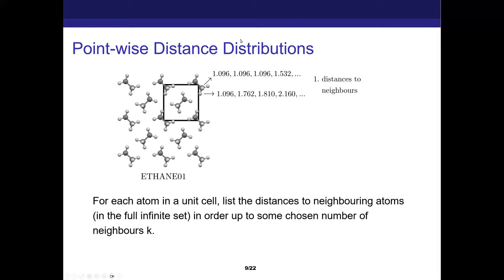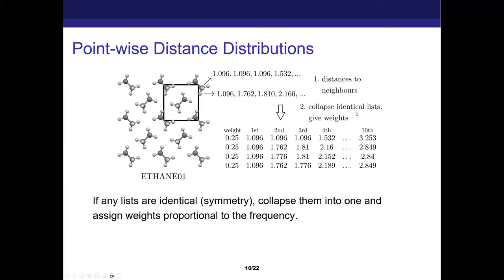So the top list of values is for the carbon atom in this molecule. The first three are the same - they're just to the surrounding hydrogens. And then the next one is to the other carbon atom. You can list as many distances as you want beyond the boundary of the unit cell. Theoretically list infinitely many, but you have to choose some number to stop at, which we call K. If we have two lists which are the same, we merge them into one list and give these weights proportional to the frequency.